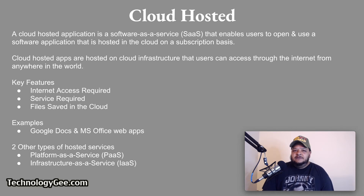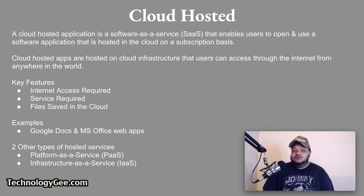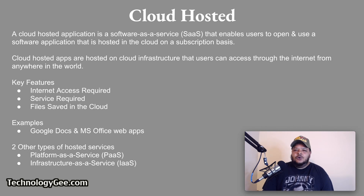There are two other types of hosted services. The first is platform as a service, a category of cloud computing that provides a platform allowing customers to develop, run, and manage applications without the complexity of building and maintaining the infrastructure typically associated with developing and launching an app. And infrastructure as a service is a service model that delivers computer infrastructure on an outsourced basis to support enterprise operations, typically providing hardware, storage, servers, data center space, or network components.